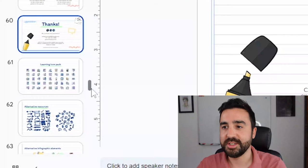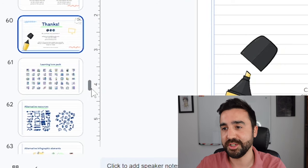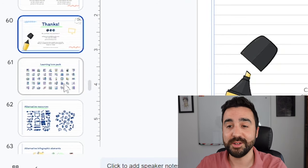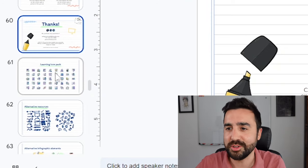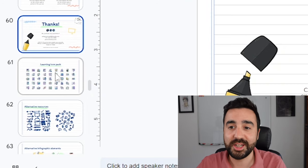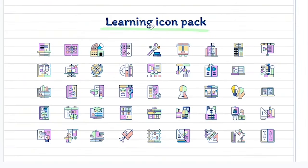There are 60 slides in this presentation. Something I actually missed when I first started using this: if you keep scrolling down, there are actually some alternative resources. If you're editing the presentation and you're missing some icons or graphics, at the end of the presentation there are slides containing lots of icons and resources you can just copy and paste into the slides you want. For example, there's a learning icon pack and all of those icons can be selected and copied.